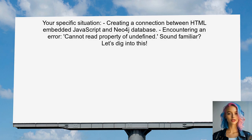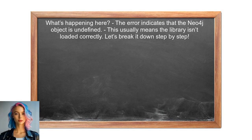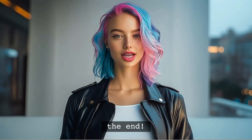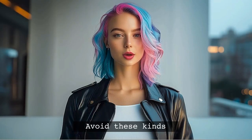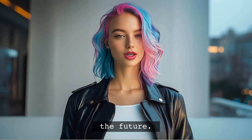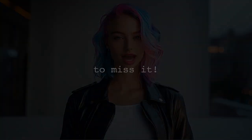Let's dig into this together. The error indicates that the Neo4j object is undefined, which usually means that the library isn't loaded correctly. This can happen if the script tag isn't pointing to the right location, or if there's an issue with the library itself. Let's break it down step-by-step — and stick around, I'll share a pro tip at the end that will help you avoid these kinds of issues in the future.